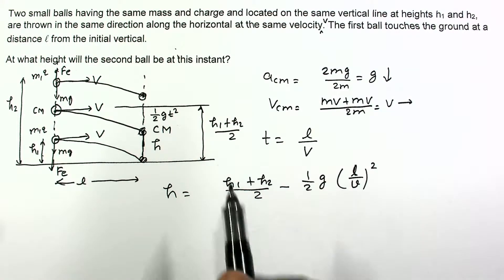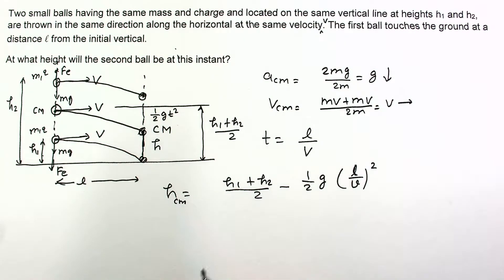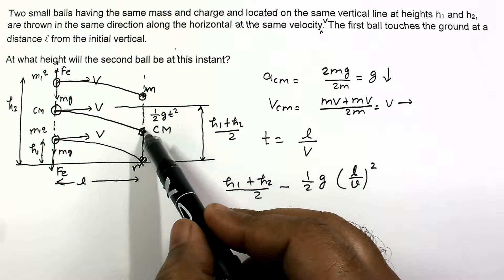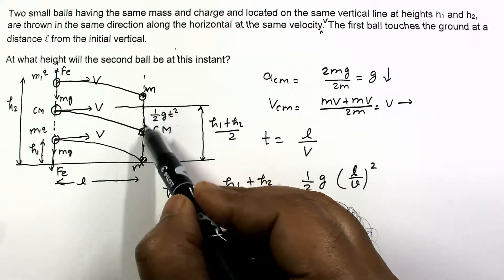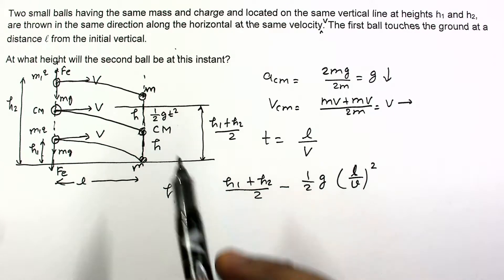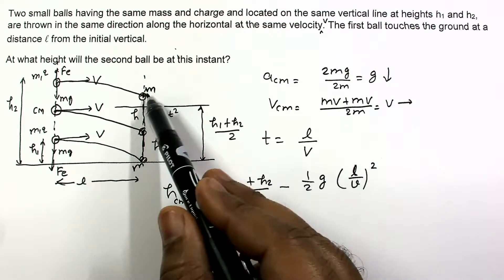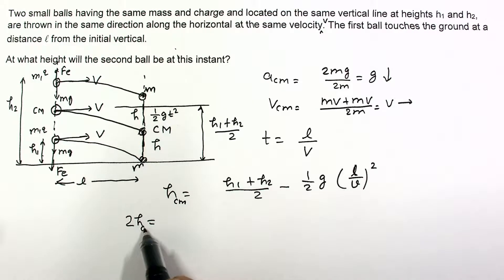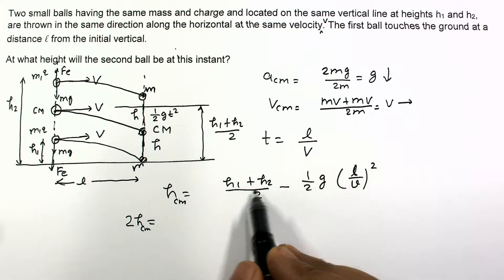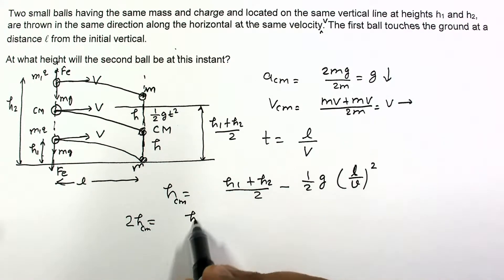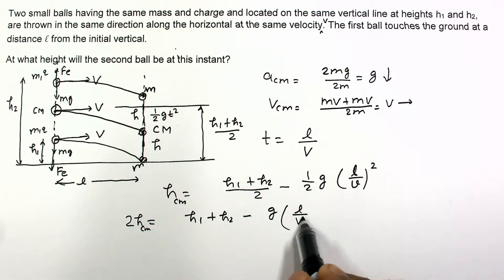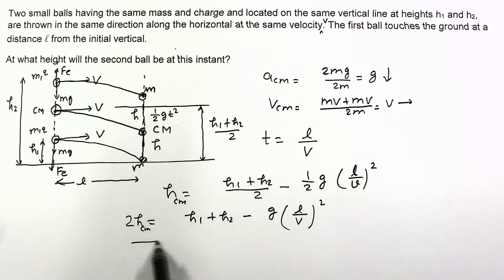Since the masses are equal, the center of mass is at the midpoint between the two balls. The first ball is on the ground (height 0), so the center of mass height H equals half the height of the second ball. Therefore, the height of the second ball is 2H, which gives the final answer: h1 + h2 − g(l/v)².